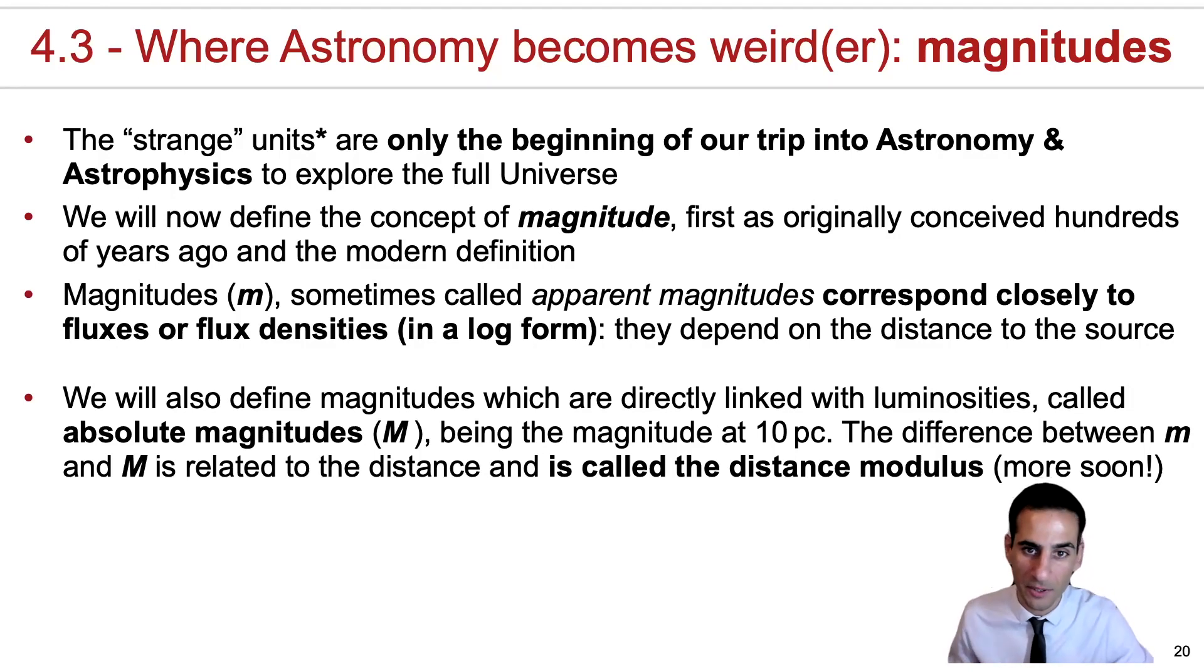Magnitudes are sometimes called apparent magnitudes, and that is because they correspond very closely to what we just discussed in terms of fluxes or flux densities in a log form that is important to point out.